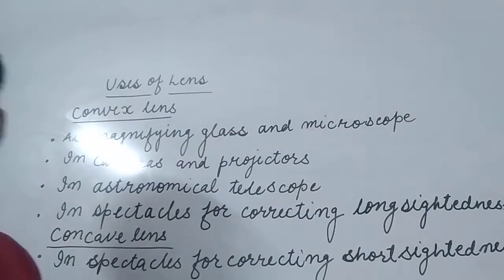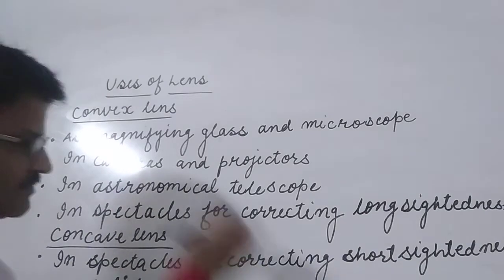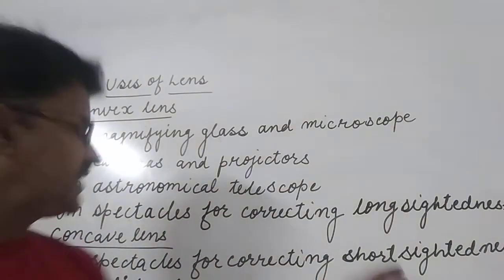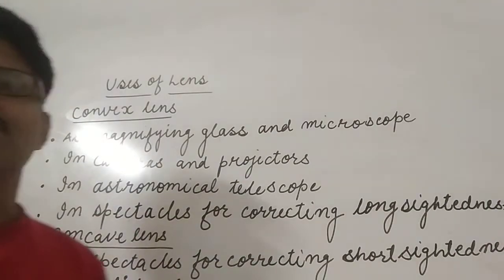In spectacles for correcting short-sightedness. In Galilean telescope. So these are the uses of the concave lens: in spectacles for correcting the short-sightedness and Galilean telescope.